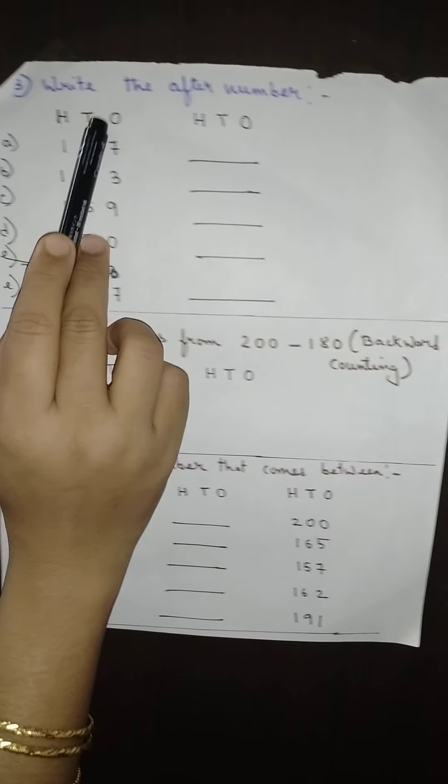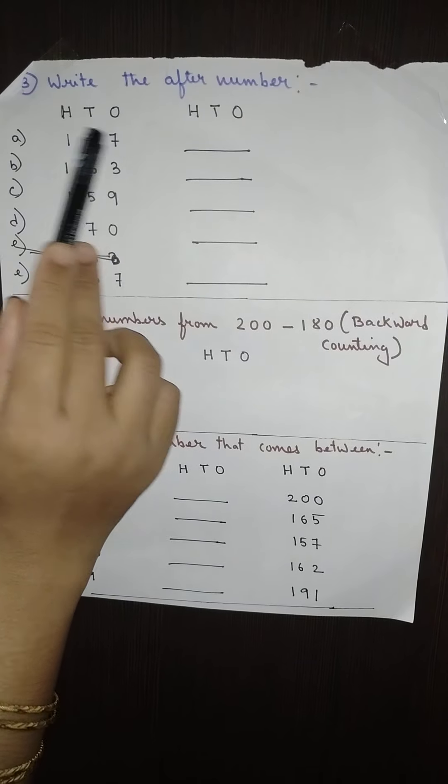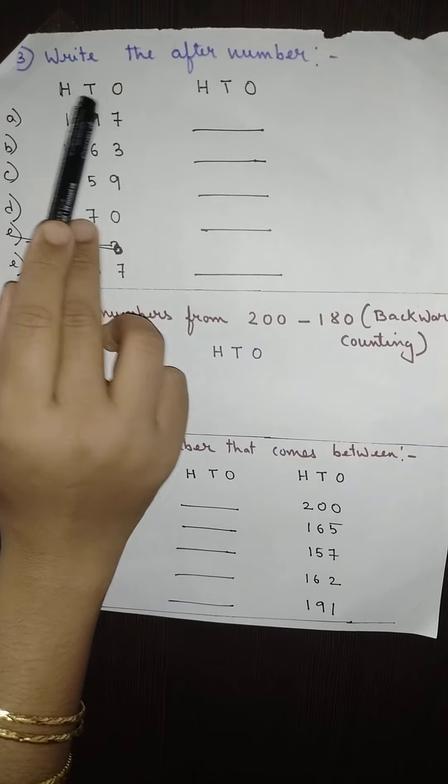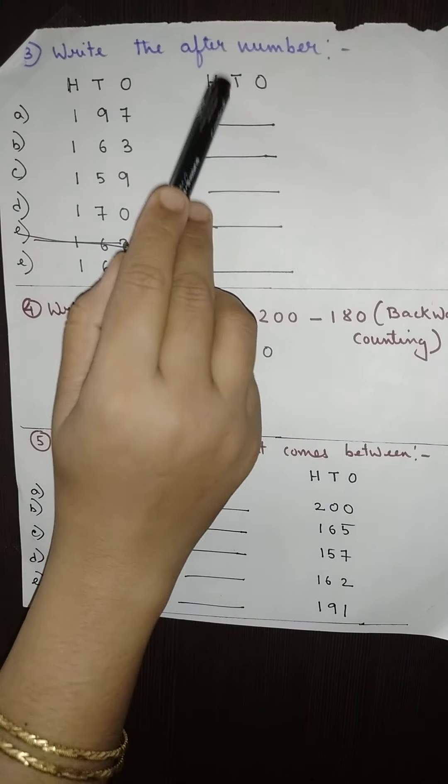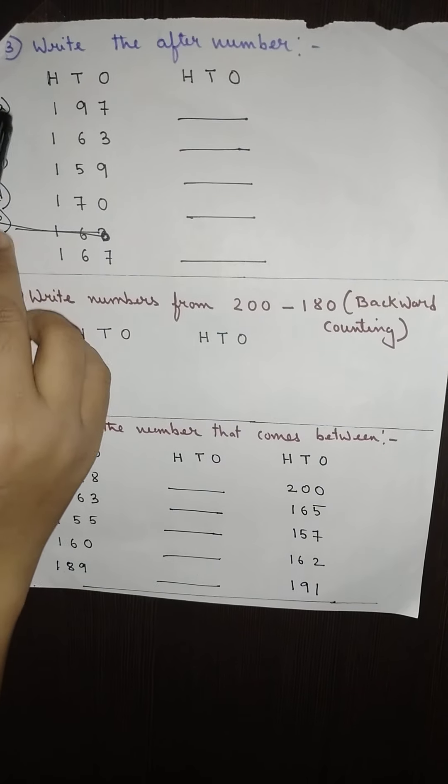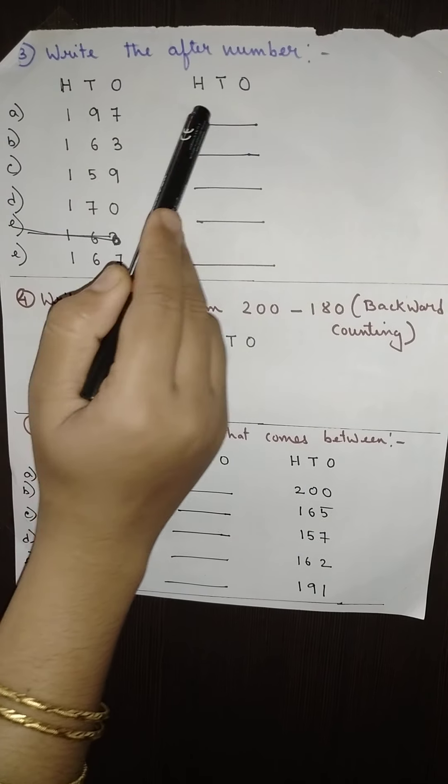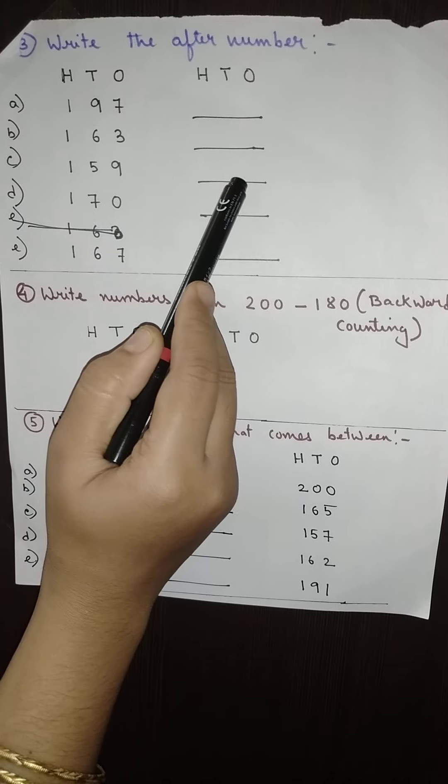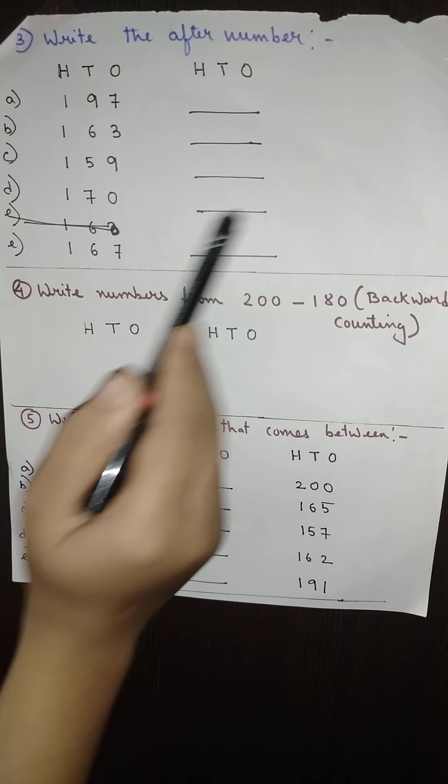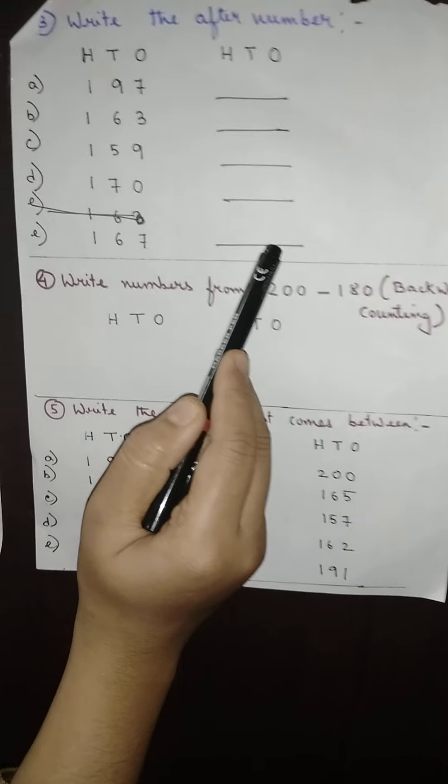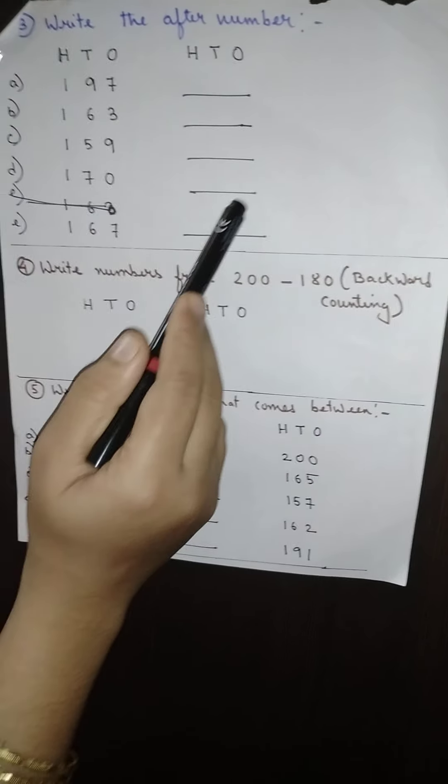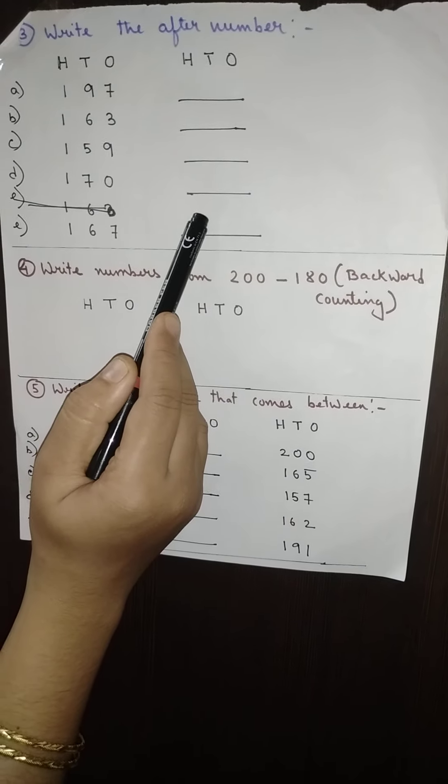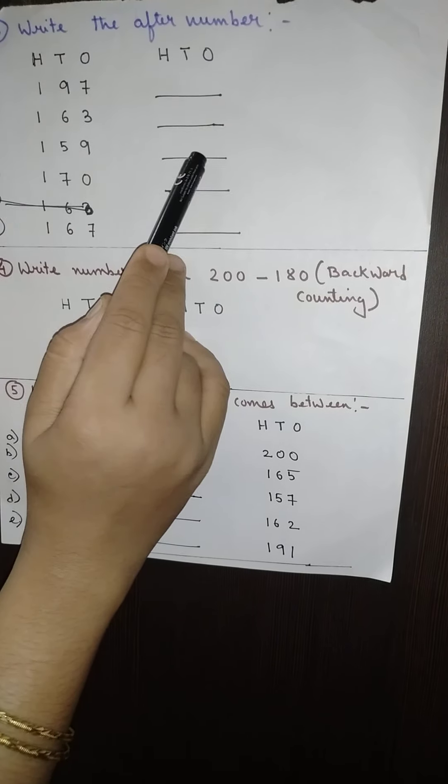Now next you come to number 3: write the after number. Here also you can see I have made two columns. H T O leaving one box, again one H T O. A, B, C, D, and E: 197 one dash, 163 one dash, 159 one dash, 170 dash, and 167 dash. So my dear children you can use your colored pencil or crayon color only for drawing this dash. No uses of sketch pen.